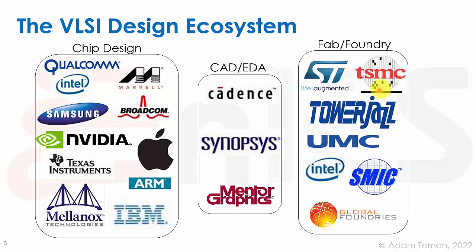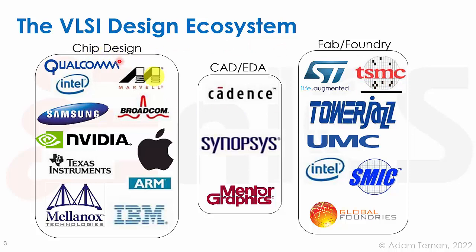TSMC is a pure play foundry — they don't make their own chips, only for others. Intel, by contrast, has fabrication plants inside the company and does both chip design and production. Recently Intel announced they will also provide foundry services. Intel also uses TSMC and Samsung to print some chips, so in that respect they are partly fabless, but they do have fabs inside — so they're not generally a fabless company.